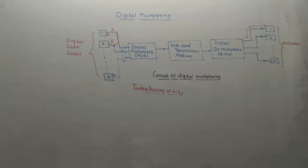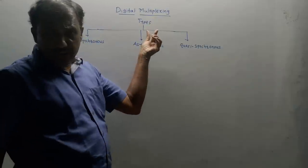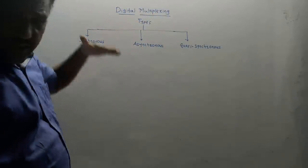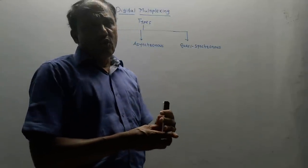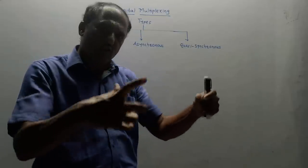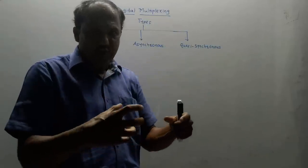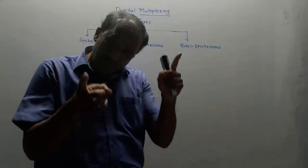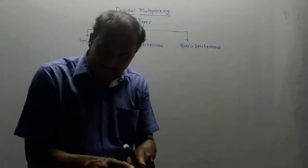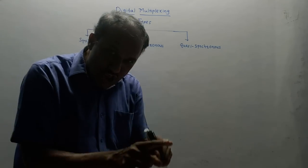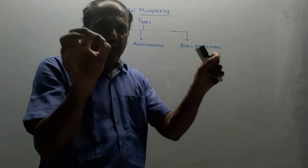Now let us discuss the different types of digital multiplexing techniques. We have studied the concept of digital multiplexing — we have to consider one bit or one frame from each source and transmit all this data through a common channel. You need to also send control bits as well as synchronization bits because there can be variation in the bit rate of each source.